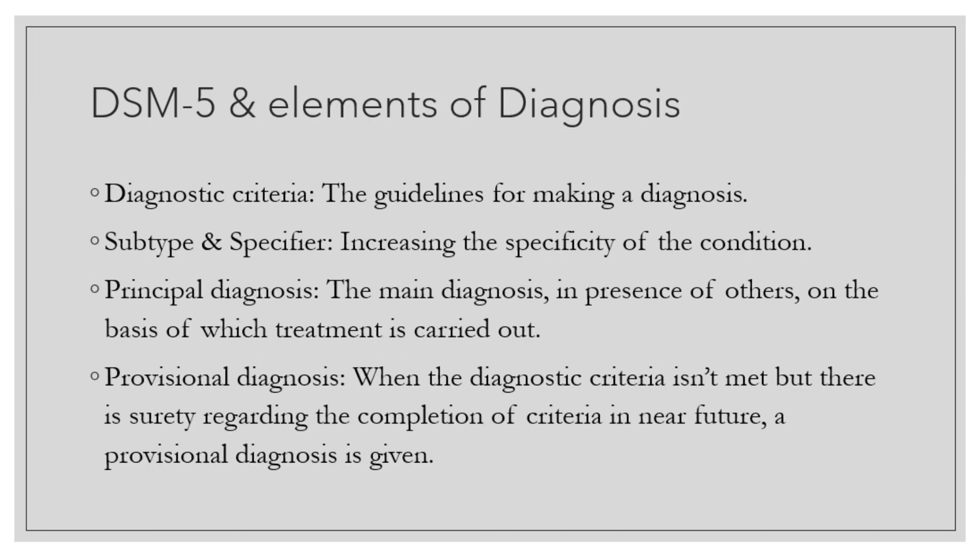There are a few key terms to know when using DSM-5. There is a diagnostic criteria, which is basically a set of symptoms that need to be met by the patient within a time span for the diagnosis of a disorder. For example, one cannot be labelled clinically depressed simply because they felt sad two times within a month.